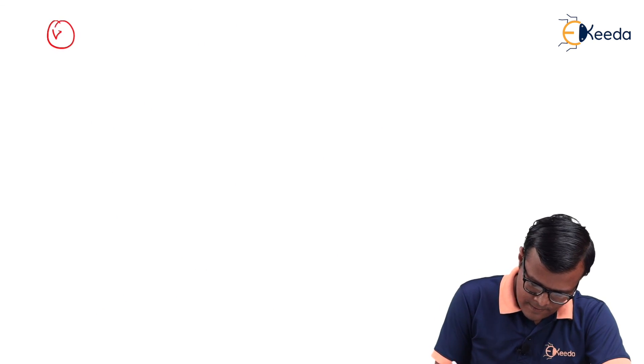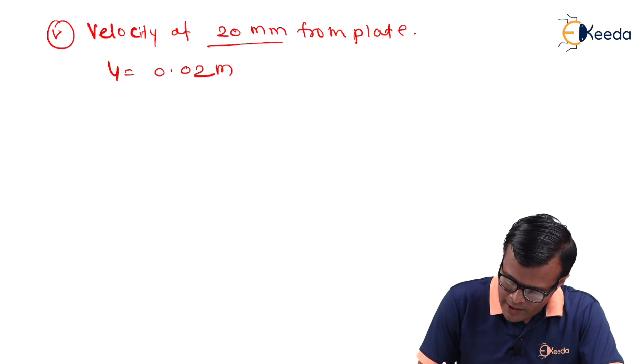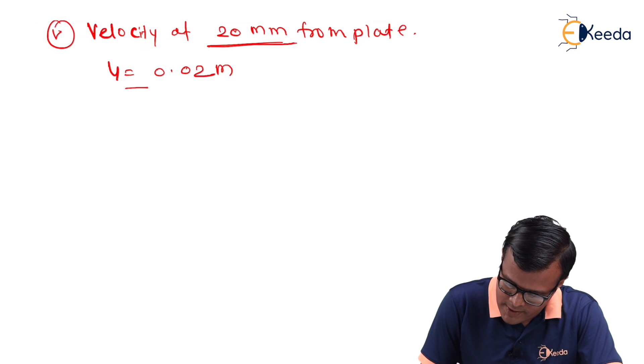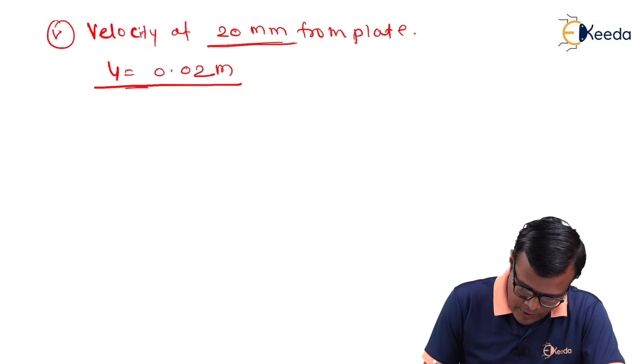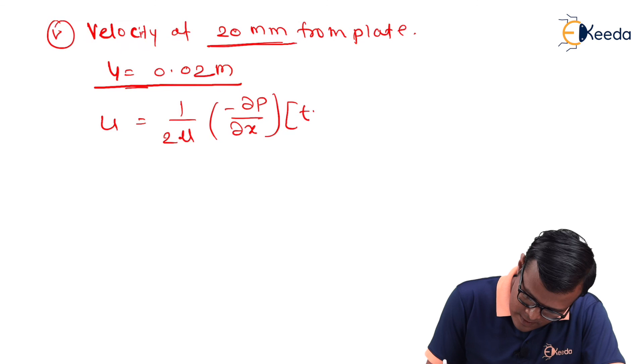Now, last term remaining is velocity at 20 mm from plate. 20 mm means y value equal to 0.02 meter. Velocity at 20 mm from the plate that is equal to y value is 0.02 meter. So, we will use the relation u equal to 1/(2μ) × (-dp/dx) × [ty - y²].